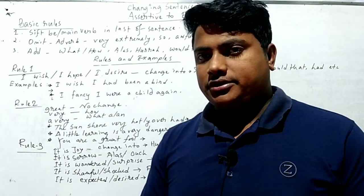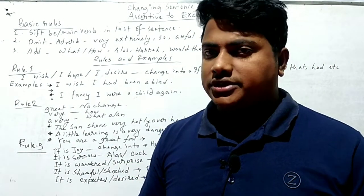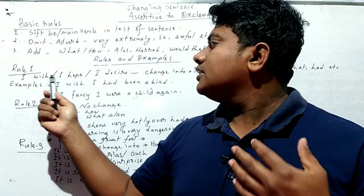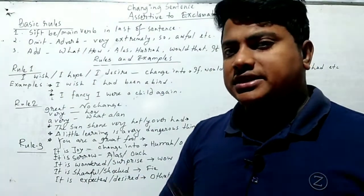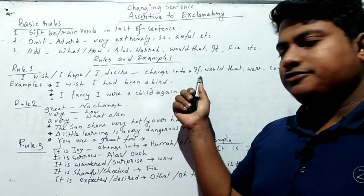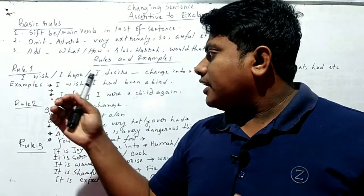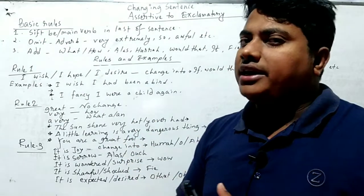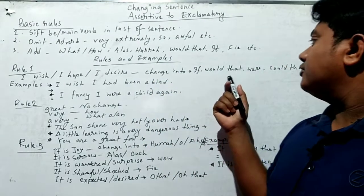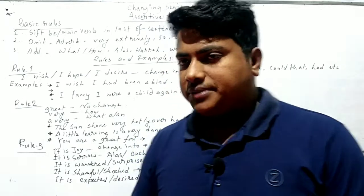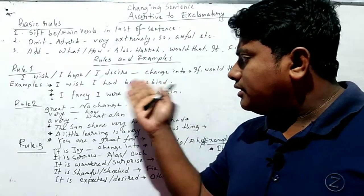Now we go to rule one. We know assertive sentences may include some phrases or clauses such as 'I wish,' 'I hope,' 'I desire.' These three words, or any synonym or similar phrases, change into: if, could that, would that, had, etc. So 'I wish,' 'I hope,' 'I desire' change and the replacement words are if, would that, where, could. For example: 'I wish I had been a bird.' This sentence is assertive.